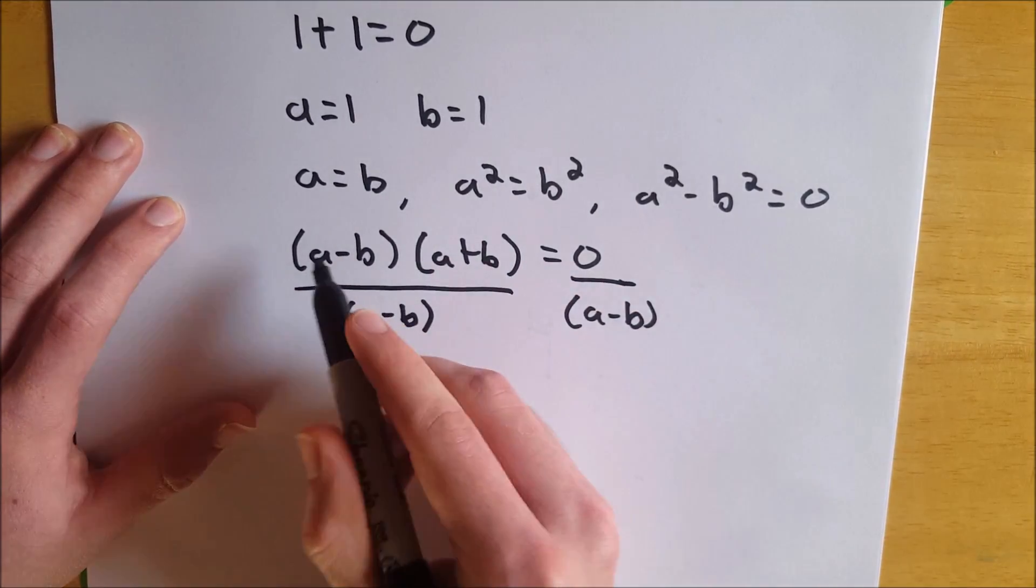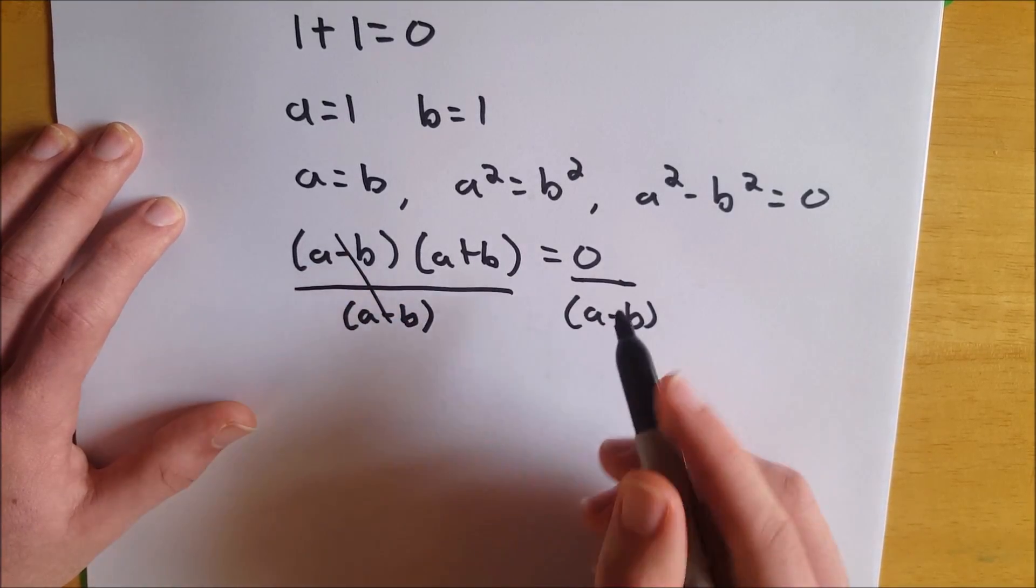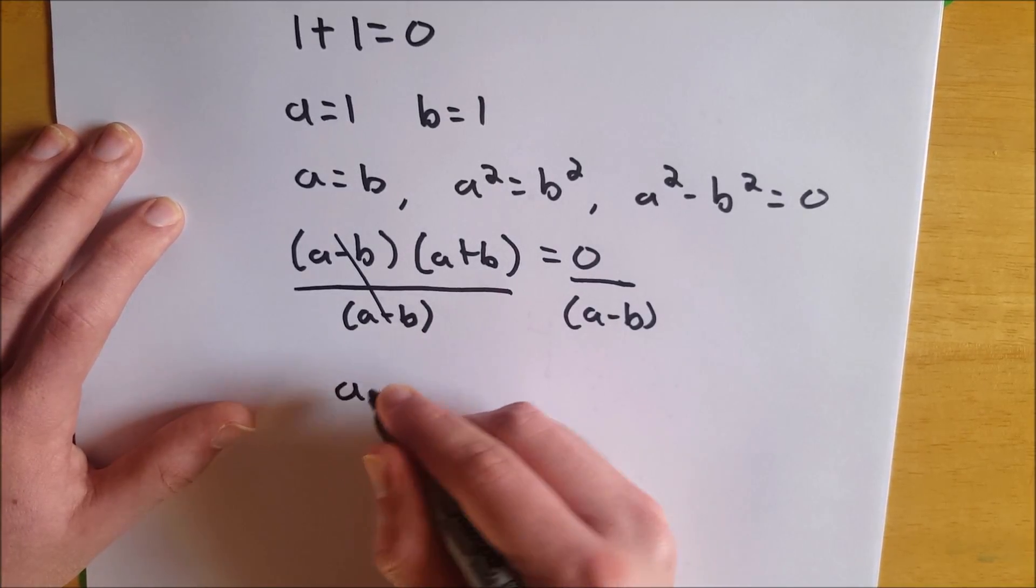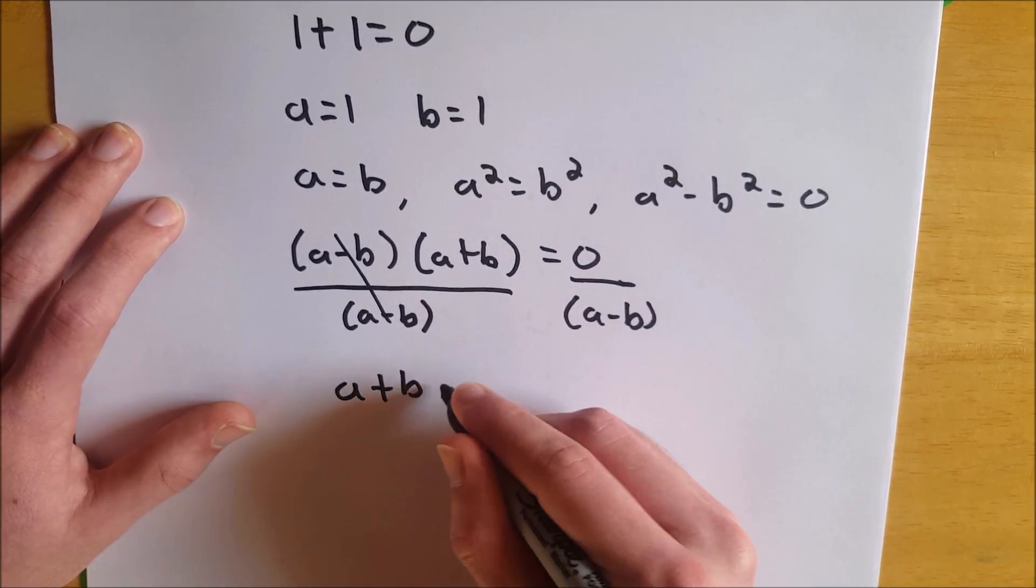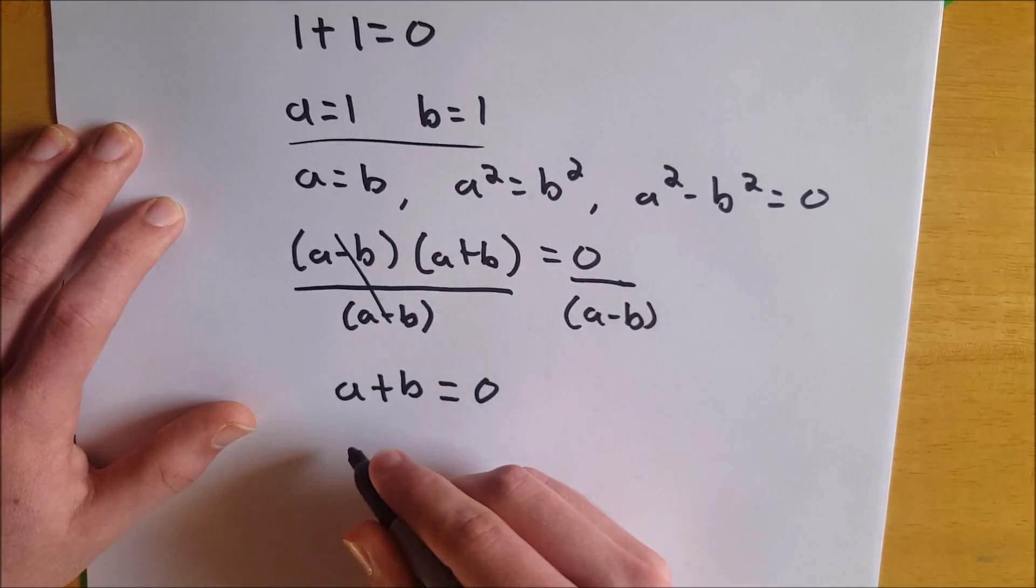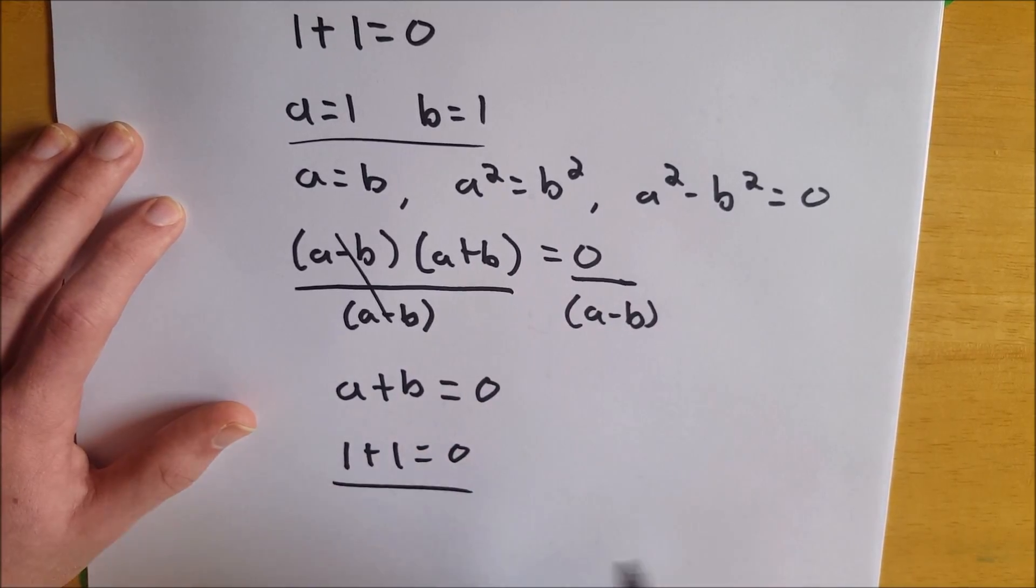So divide this by A minus B, and divide this by A minus B. Now these A minus Bs are going to cross out, leaving us with A plus B, and 0 over A minus B, of course, is equal to 0. So that leaves us with A plus B equals 0. And then by substitution, looking back up there, we get 1 plus 1 equals 0.